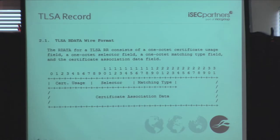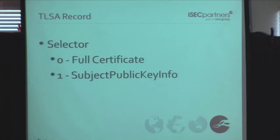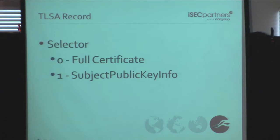What does the TLSA record type actually look like? It's pretty simple — just three different fields plus the actual signature. Those fields are: certificate usage, the selector, and the matching type. For the selector, we can specify a full certificate or just the subject public key info — so we can pin on the full cert or on just that field. For matching type, we can do a one-to-one match with the full binary certificate in the record, or use SHA-256 or SHA-512. DANE's RFC actually supports expanding algorithms.